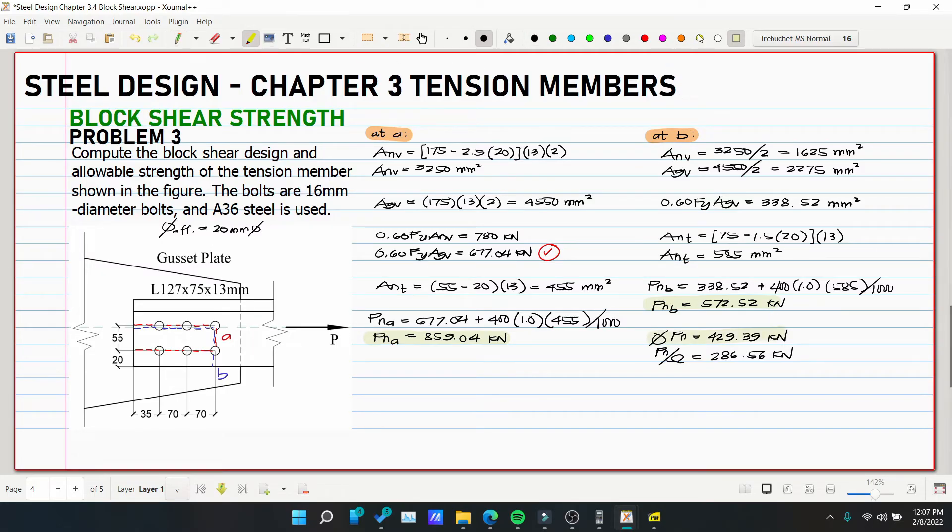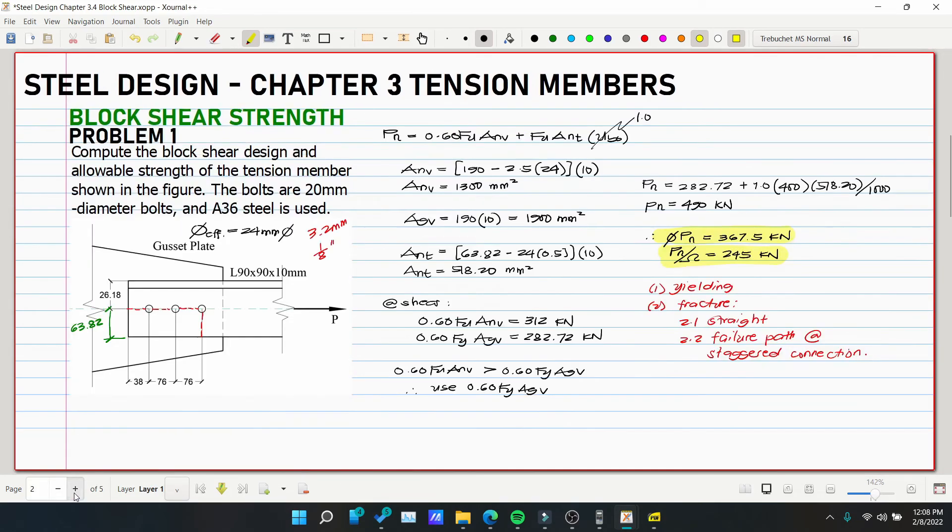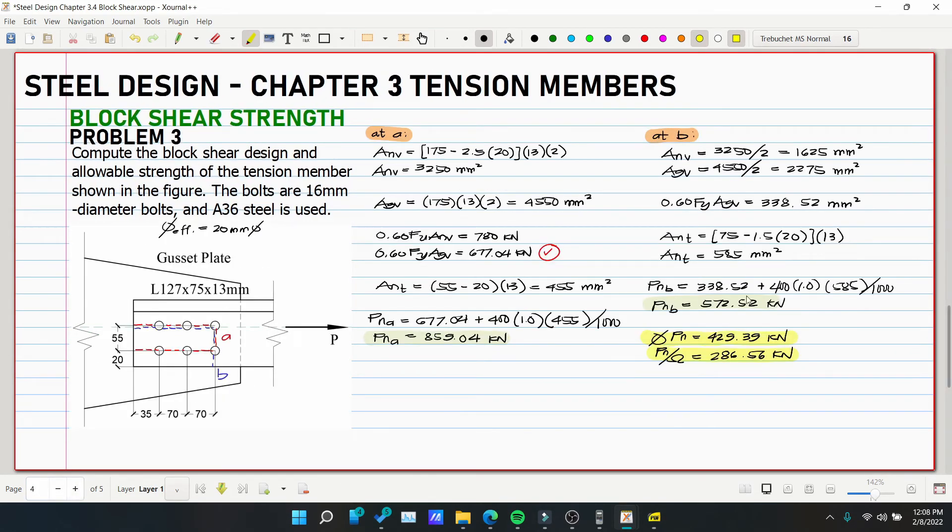Okay. Solving this block shear is actually very simple. It just looks complicated because of course there are many failure paths, and if you look at the introduction it looks difficult, right? But if you really look at it, it's actually easy. So that's how simple our problem number 3 is. This is our problem number 3 for the block shear strength under chapter 3 of tension members of steel design. So thank you for watching.